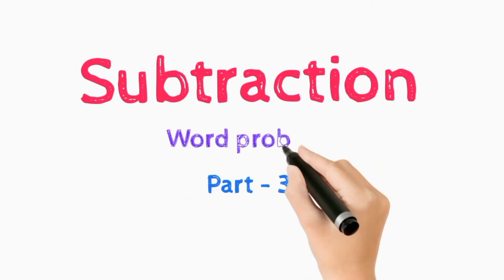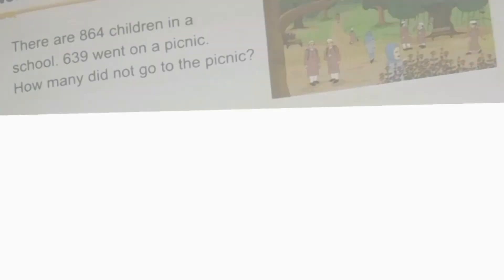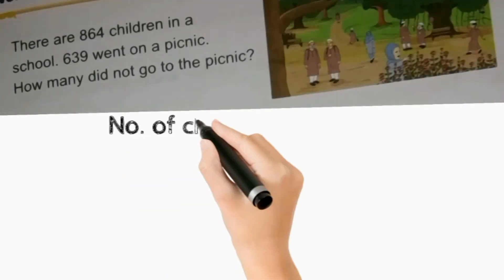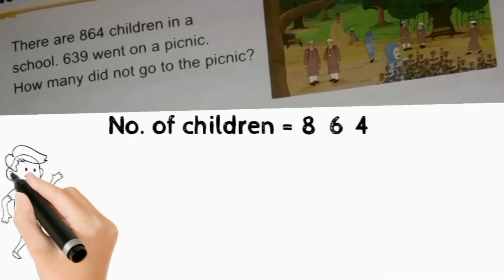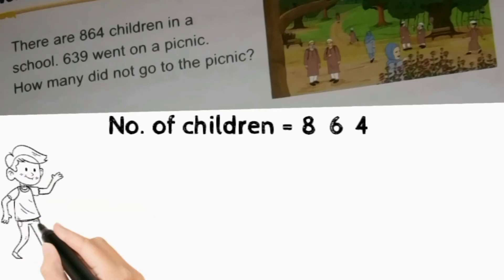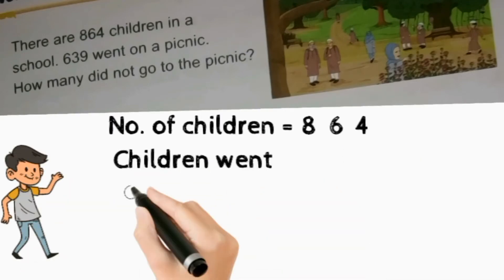Today my topic is subtraction, part three: word problems. Here you see in example number one, there are 864 children in a school. 639 went on a picnic. How many did not go to the picnic? So how do we write this?